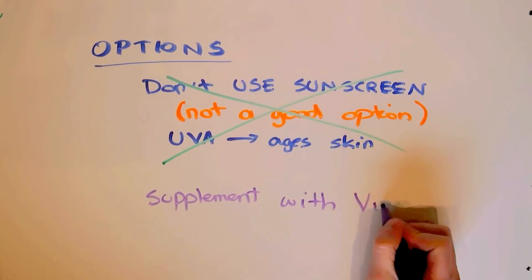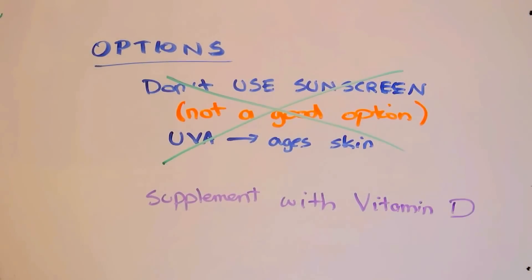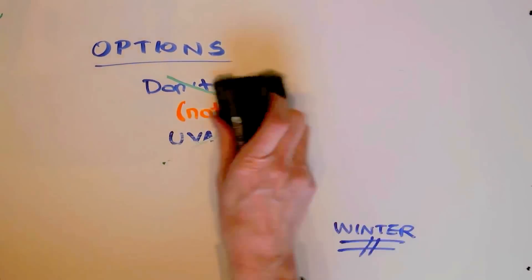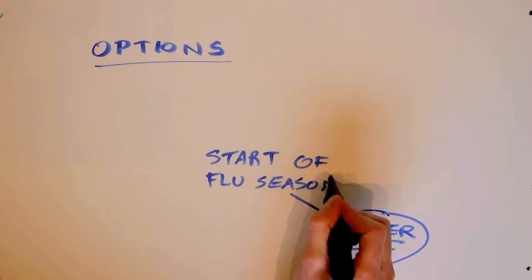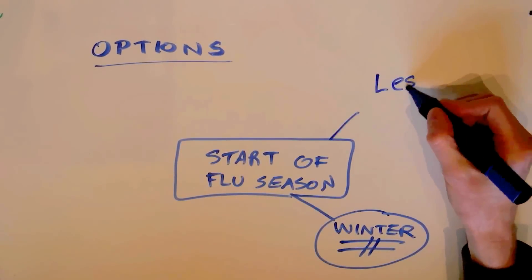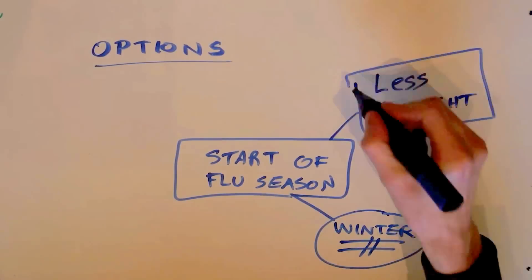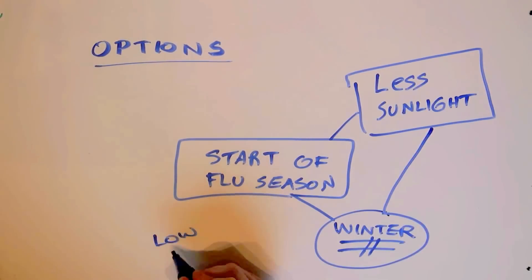The second one is supplementation. So we can supplement with, there's a variety of ways. We can drink a whole bunch of milk. Or we could use a vitamin D supplement. And there's quite a few options. And we generally recommend you take a supplement of some sort, especially if you're in a northern climate.